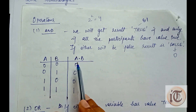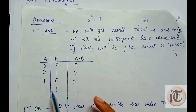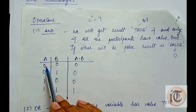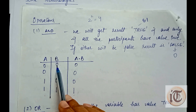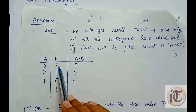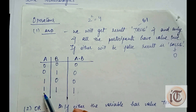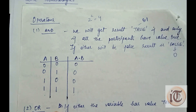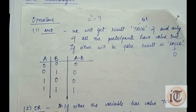For the AND operation, we get result 1 if and only if all participants have the true value. If both a and b are 0, the outcome is 0. But when both a and b are 1, the outcome is 1. This is how we prepare the truth table for the AND operation.